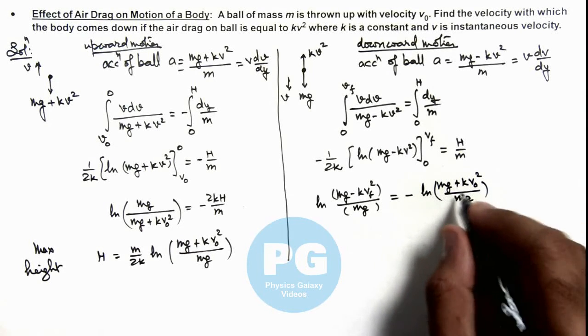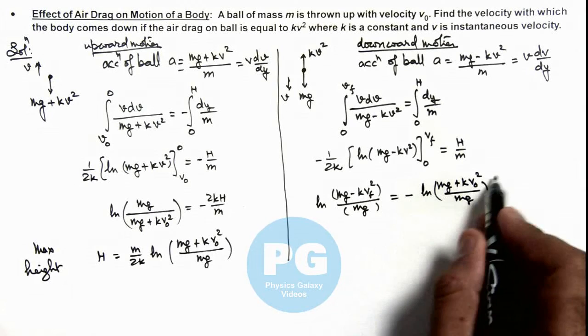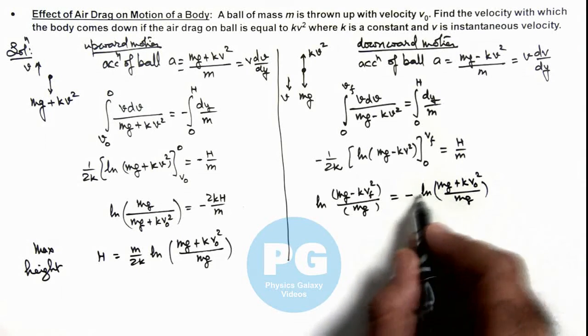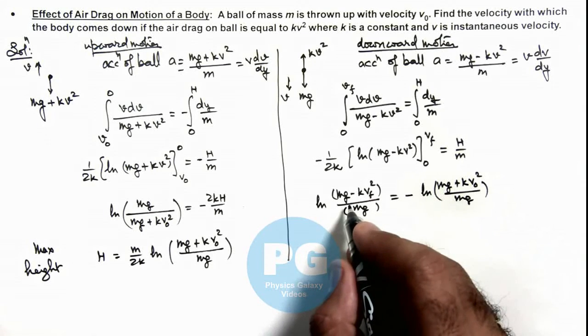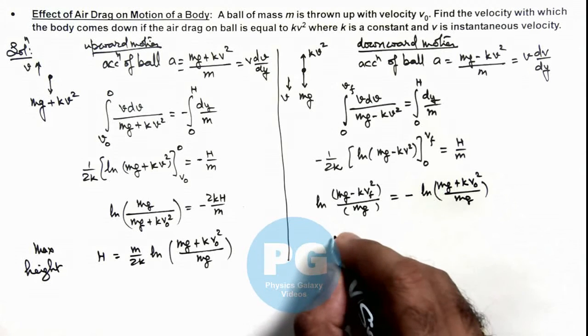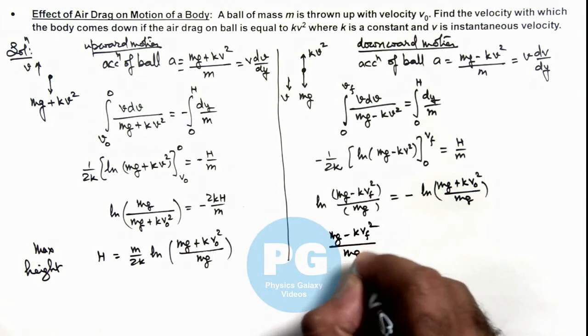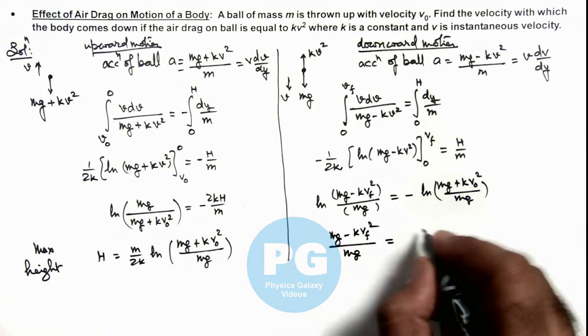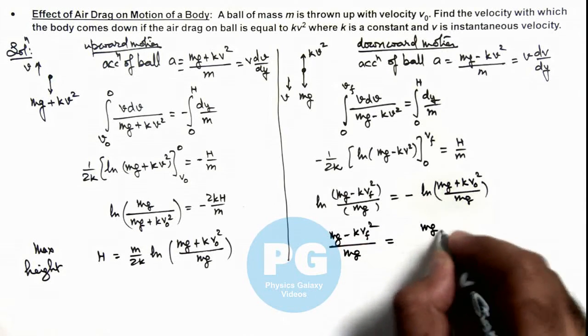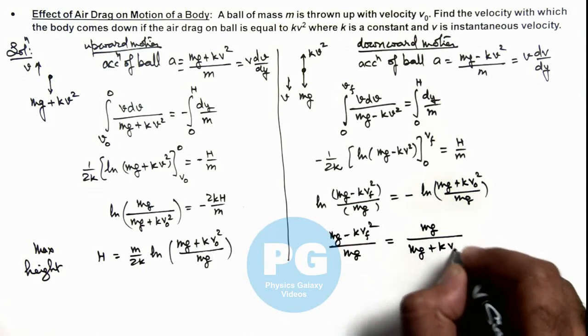And further if we simplify, this negative sign can be taken inside and we can take antilog on both sides. So this will give us (mg minus kv_f²) by mg is equal to mg by (mg plus kv₀²). If we cross multiply it you can see what we are getting here.